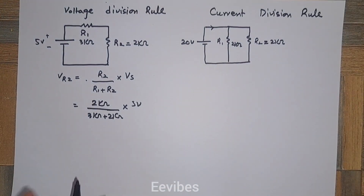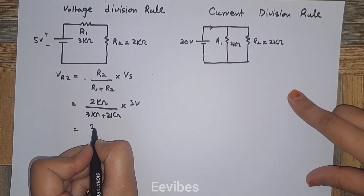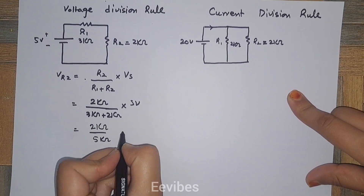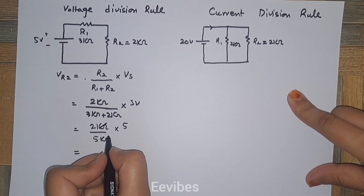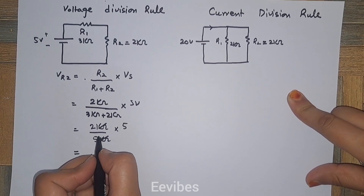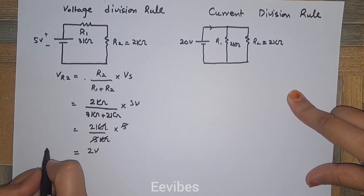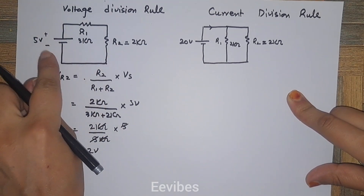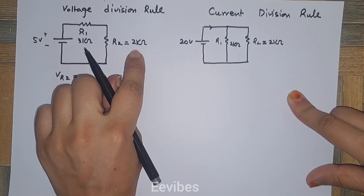You will see it comes out to be 2 kilo-ohms divided by 5 kilo-ohms, multiplied by 5. The kilo units cancel with each other, and 5 cancels out, giving you VR2 is equal to 2 volts. So 2 volts will be developed across resistor R2.